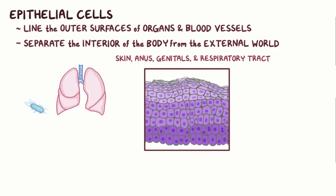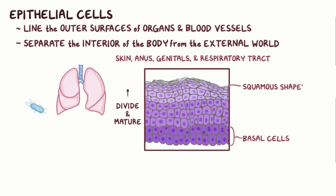At the base — the layer closest to the interior of the body — these cells are less mature, rounded stem cells, also called basal cells. Basal cells divide and replenish all the cells found in the epithelium. As the basal cells divide and mature, they move toward the outermost layer, flattening out and becoming more squamous shaped in appearance. Once they reach the top layer, these mature, flat cells are exfoliated or shed from the epithelium.